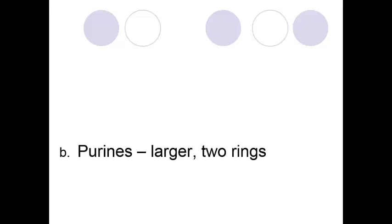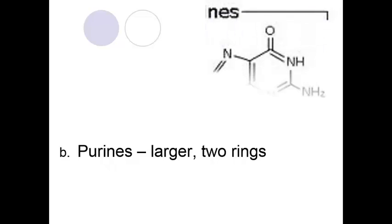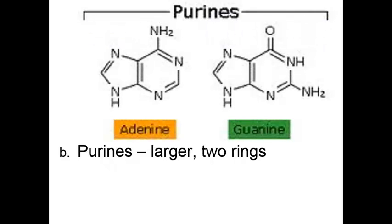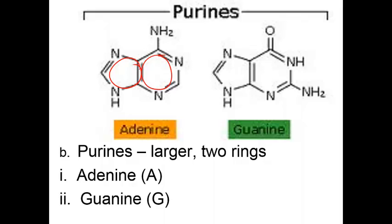Now the other type of nitrogen base is called purines. Purines are two rings, they're a little bit larger. And so you can see here the two rings bonded together, so they are bigger. And we have adenine, which we abbreviate with an A, and guanine, which we abbreviate with a G. So those are the nitrogen bases that we mentioned. That's part of what makes up a nucleotide.